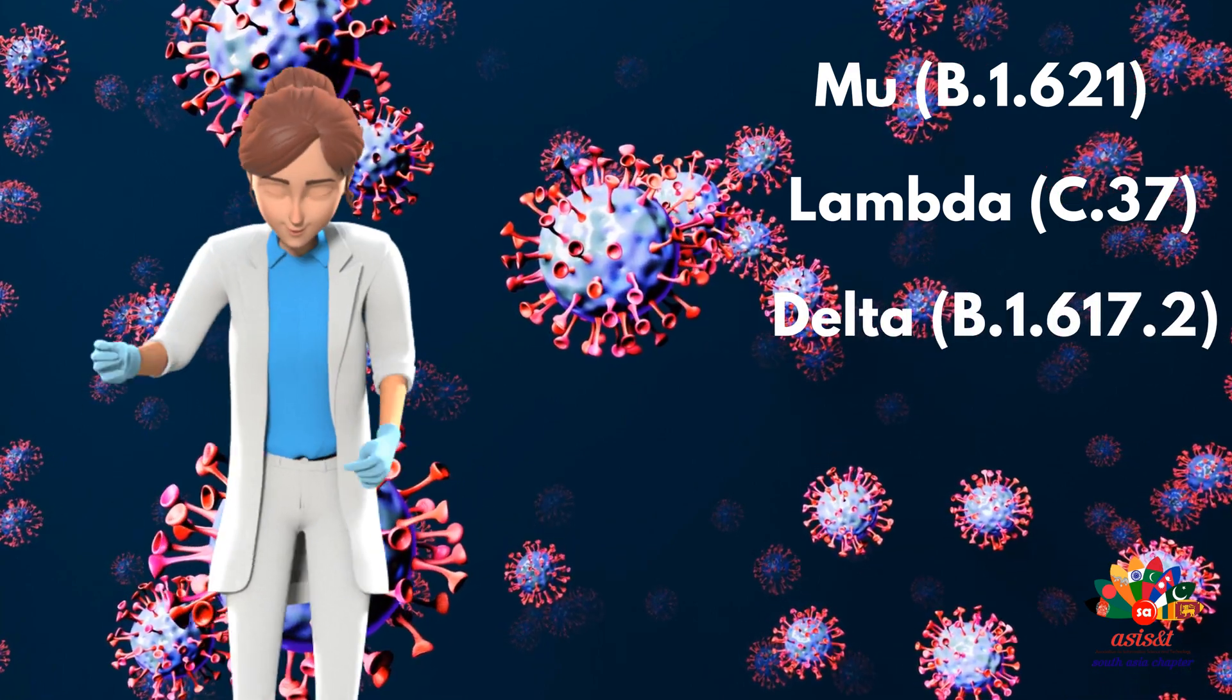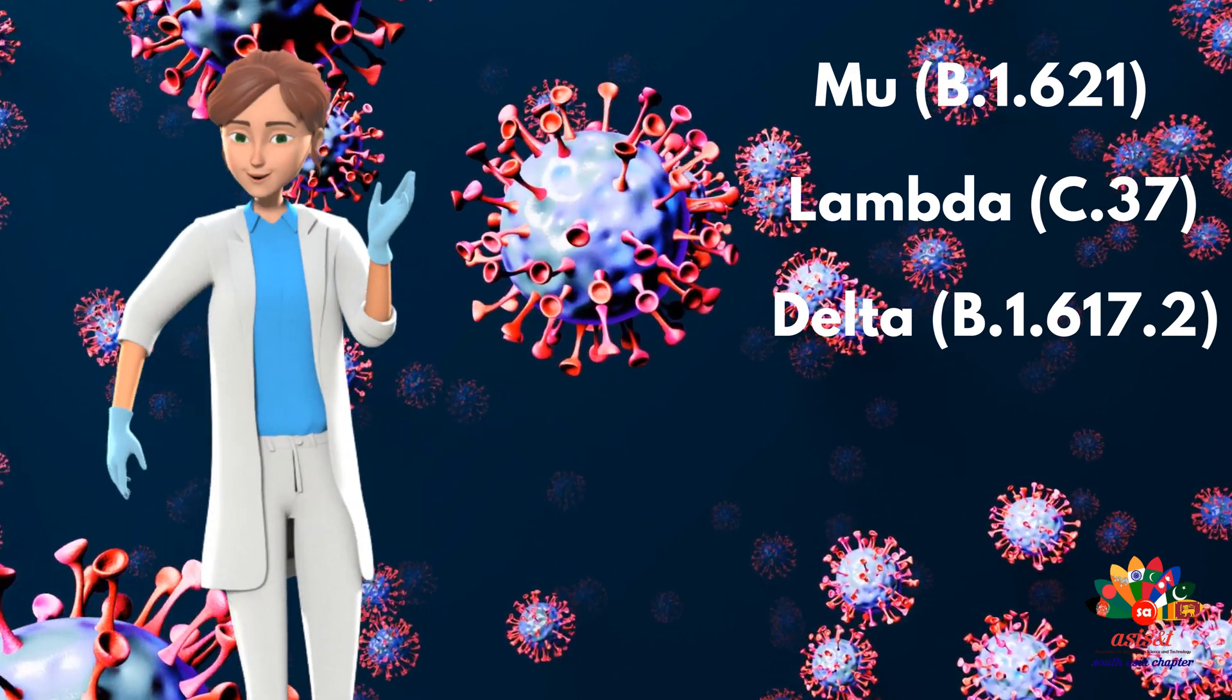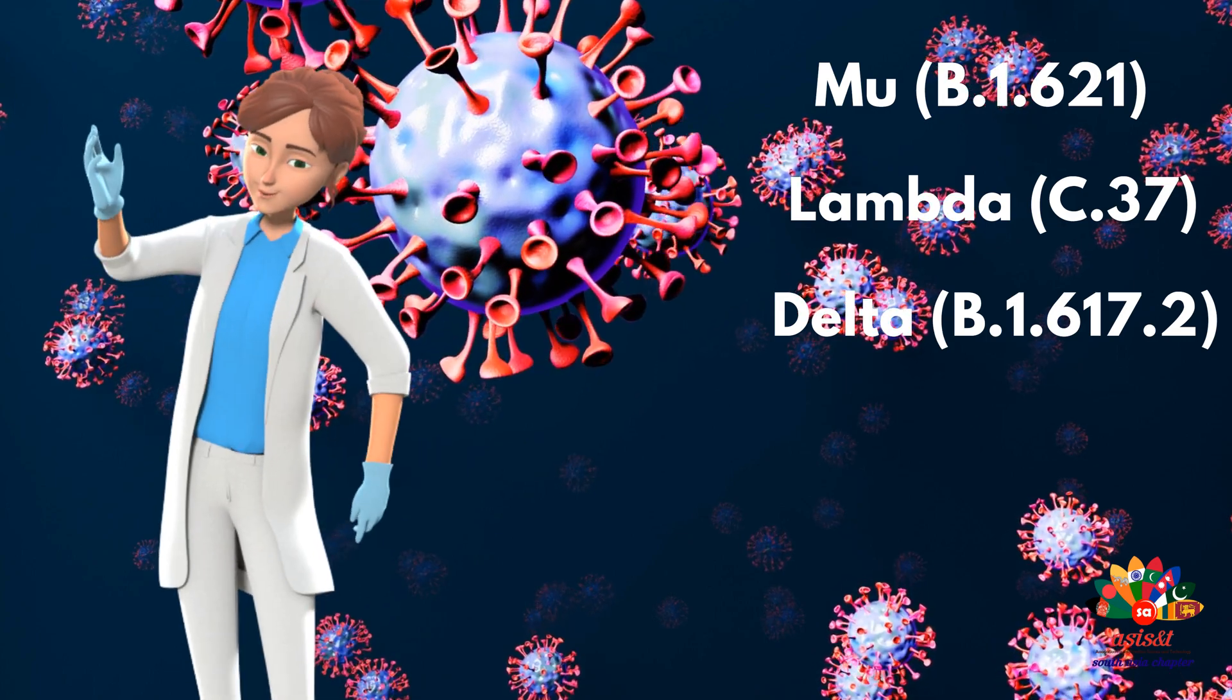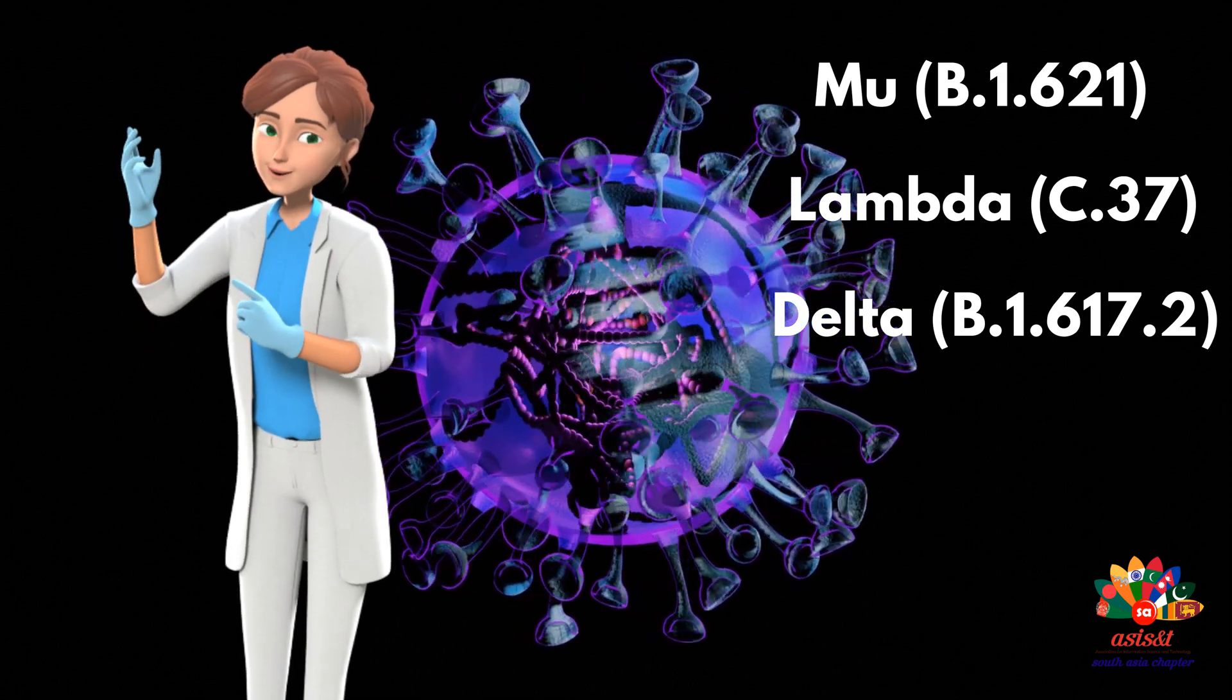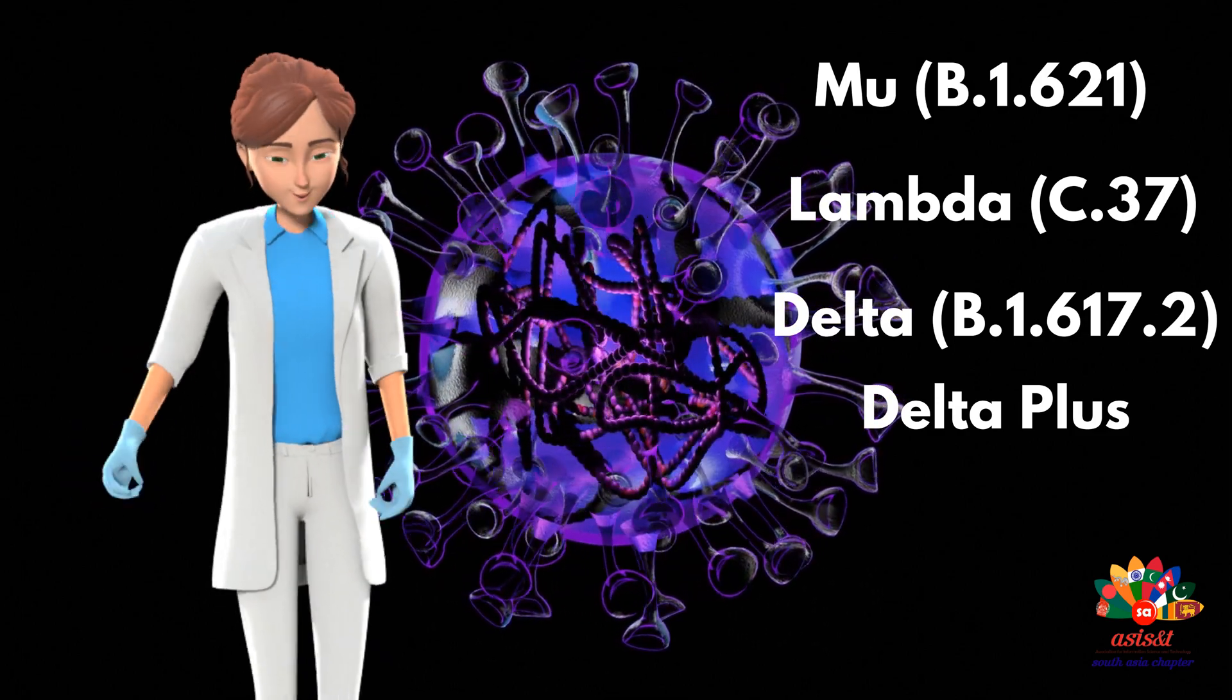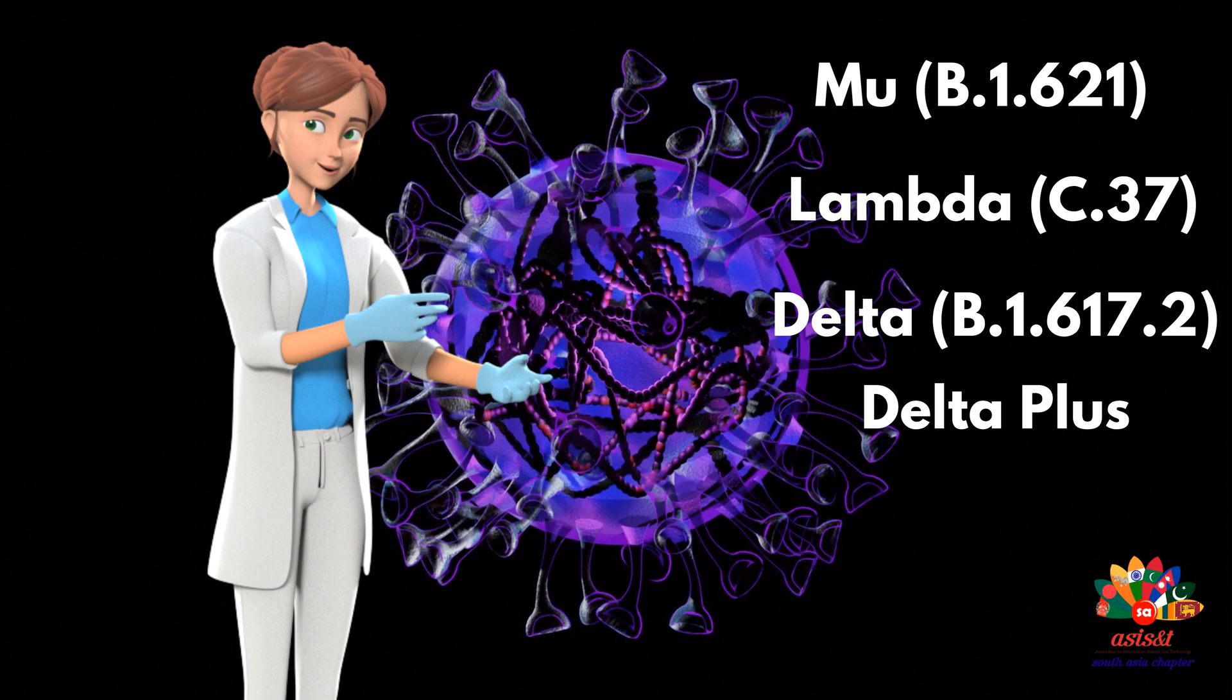It has been largely responsible for driving the second wave of coronavirus infections and was first identified in India. It has since mutated into additional variants. WHO lists Delta as a variant of concern. The Indian government has classified Delta Plus as a variant of concern in the country. This mutant of Delta was first detected in Europe in March 2021.